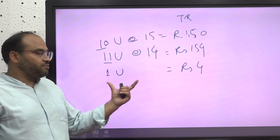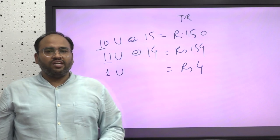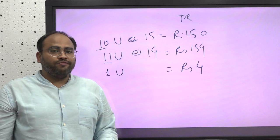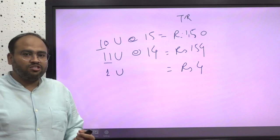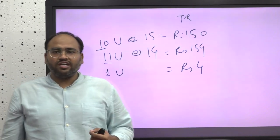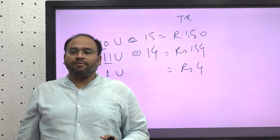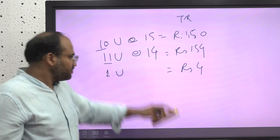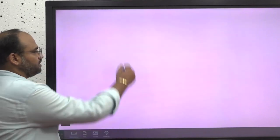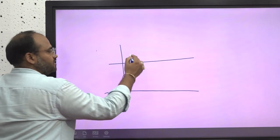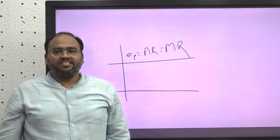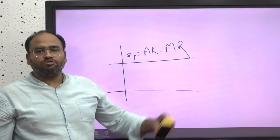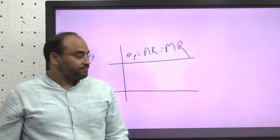We have explained total revenue, average revenue, and marginal revenue. For a perfectly competitive market, average revenue is equal to marginal revenue and corresponds to a horizontal demand curve, meaning elasticity is infinite. This was explained in the unit on elasticity of demand — the demand curve is a horizontal line where price equals average revenue equals marginal revenue. Whereas in the case of an imperfectly competitive market, average revenue is not equal to marginal revenue, which we will discuss further.